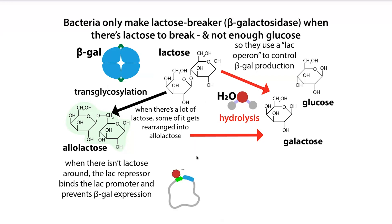Allolactose binds to the lac repressor, which is a protein that sits on top of the lac promoter. The lac promoter is the region of DNA where RNA polymerase is going to bind and start making messenger RNAs — making the recipe copy from the beta-galactosidase gene and the other ones in the lac operon. That mRNA is then used to make protein as ribosomes travel along it. If the lac repressor protein is sitting on top of that promoter, the RNA polymerase can't find it, so you don't get mRNA made and you don't get protein made.